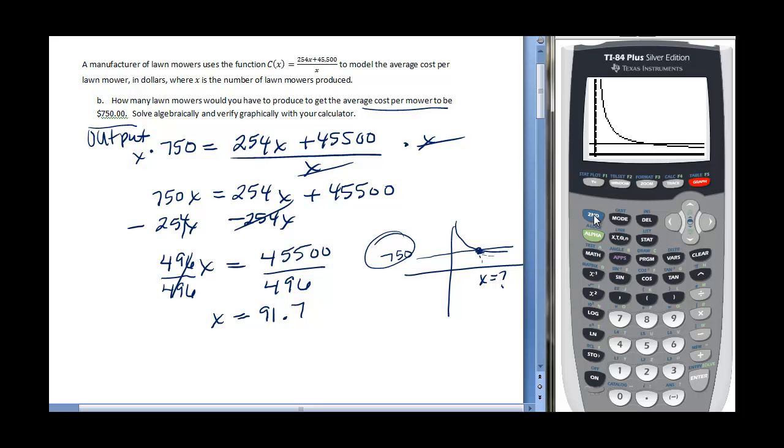I'm going to click on second trace. That gets you to calculate. I'm going to choose intersect, number five. It's going to say first curve, second curve. I'm going to say from there to there. Guess, don't want to. Here, it's going to show me that the intersection is at 91.7, 750.